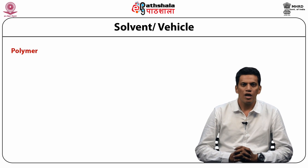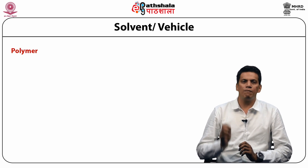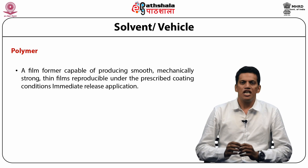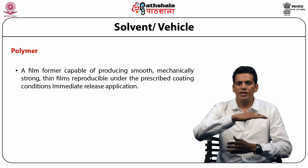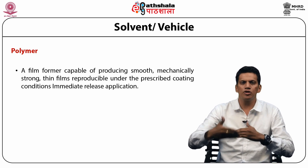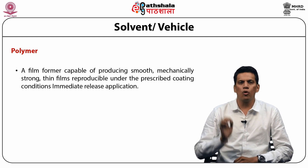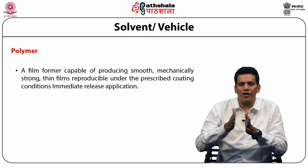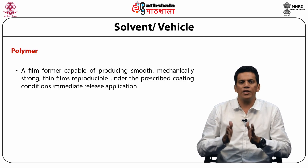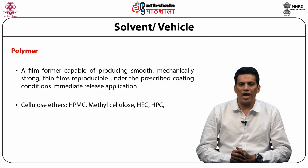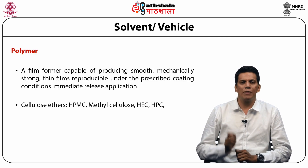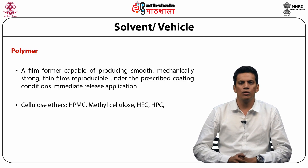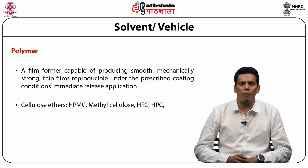The second ingredient, which is the heart of the coating composition, is polymer. Polymers are film-forming agents capable of producing smooth, mechanically strong, thin films reproducible under prescribed coating conditions. Films can be divided into immediate release films — examples include cellulose ethers such as hydroxypropylmethylcellulose (HPMC), methylcellulose, hydroxyethylcellulose, and hydroxypropylcellulose. Acrylic polymers are also used for immediate release applications, such as Eudragit, Eudragit RL, and Eudragit NE30D.